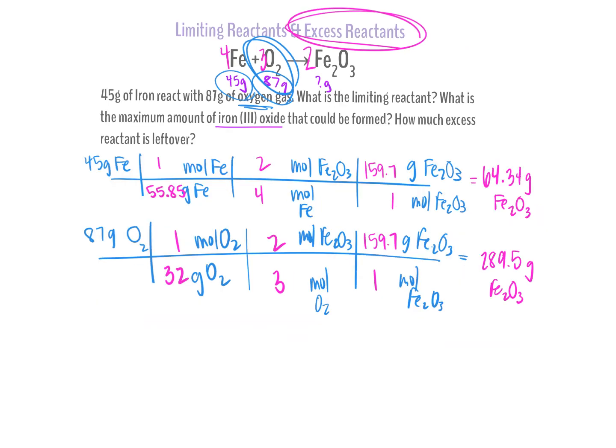So at this point, am I able to answer the first part of my question? Which is my limiting reactant? I can answer that. So which one is it? Iron or is it oxygen? Iron is my limiting reactant because it gives me the smaller amount of product. That means my production will stop. So my limiting reactant is iron. Then it says what is the maximum amount of iron oxide that can be formed? Is it going to be 64 or 289? 64.